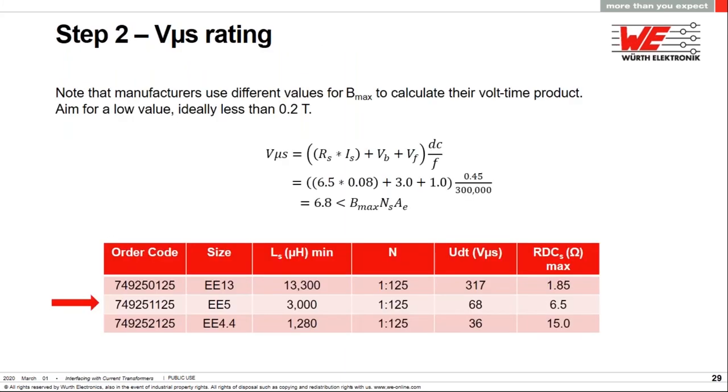So after looking through these charts, I've listed here all of the 1 to 125 ratio parts which would work and I select the EE5 which has plenty of margin as far as volt seconds is concerned, but I also want to have good accuracy which I'll show you in a moment.